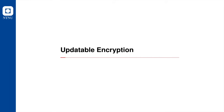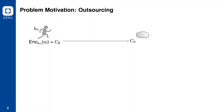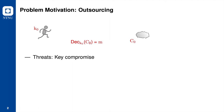I will first talk about what updatable encryption is and offer a motivational example to show a use case of updatable encryption. Let's consider a cloud problem. A cloud user Alice wishes to outsource some data to the cloud storage provider. She has a key K0 which can be used to encrypt data. Alice encrypts data M locally and sends the ciphertext C0 to the cloud, which will store this ciphertext.